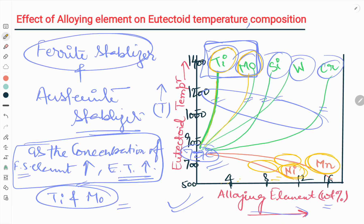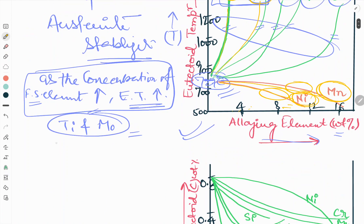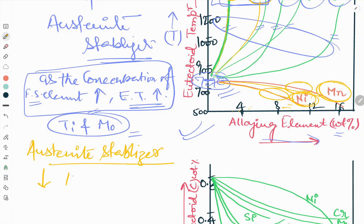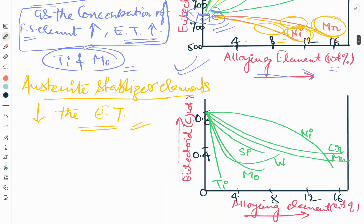With Ni and Mn, increasing the alloying element decreases the eutectoid temperature in a similar way. So we can say that austenite stabilizer elements decrease the eutectoid temperature.